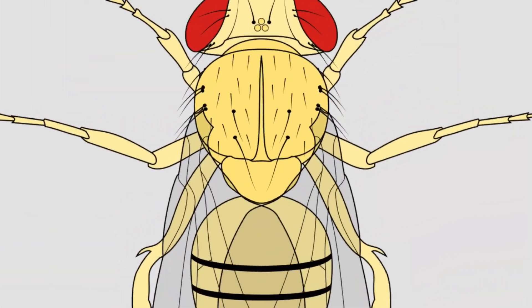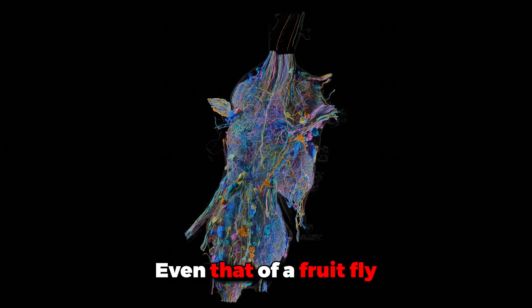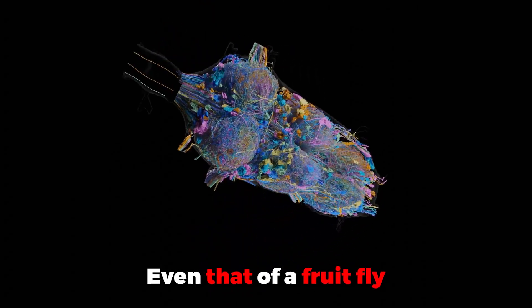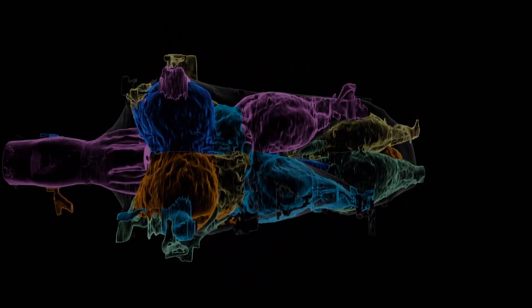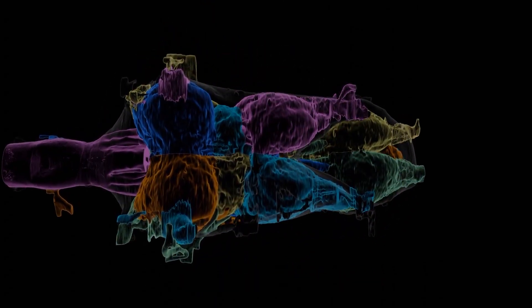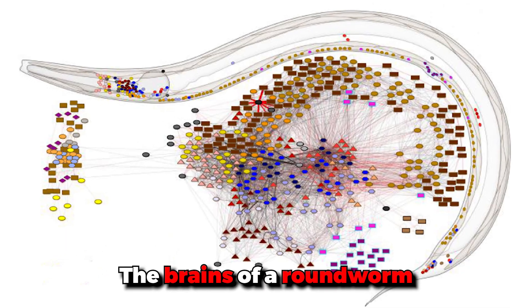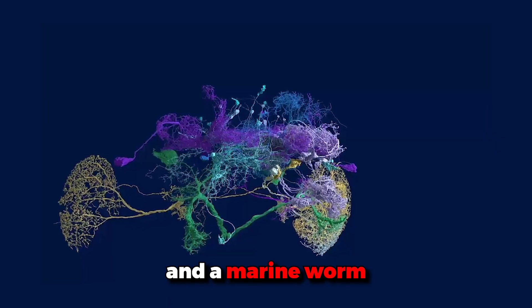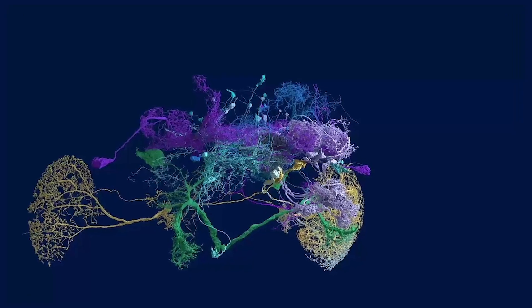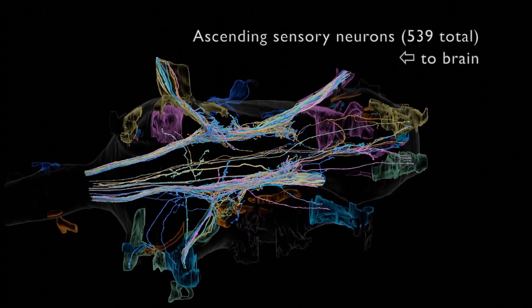This may not sound impressive, but the brain, even that of a fruit fly, contains vast networks of interconnected neurons called the connectome. Until now, only the brains of a roundworm, a sea squirt, and a marine worm have been completely mapped, each of which contains just a couple of hundred connections. But a complete map of the connectome of a fruit fly larva reveals it contains more than 3,000 neurons and more than half a million connections between them.